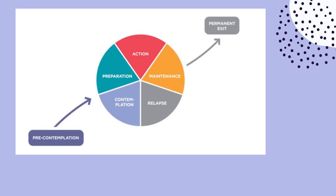From there, you move into preparation, and this would be starting to plan for the behavior change — you're thinking this is something you want to move forward with, and you're thinking of the steps it will take to make the change. Next is action: this is actually doing whatever is needed to make the change and committing to it. Once you've been keeping up with the new behavior, you move into the maintenance stage, when things start to become more habitual and the behavior change becomes part of your routine.